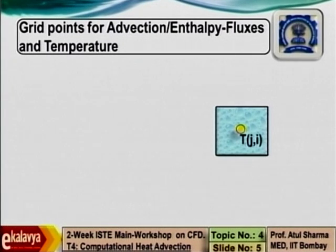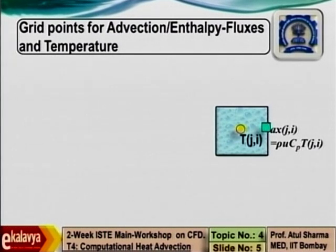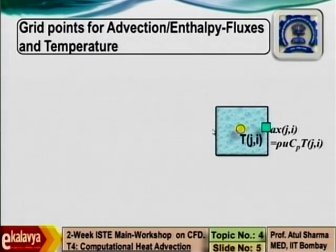In this control volume there are two vertical phase centers at which you will have qx left and right. I have to make a decision that out of the two only one should have index i comma j. Note that a phase is common to two control volumes. The left phase for this control volume will be the right phase of the west control volume; this is the right phase of this control volume but becomes the left phase of the adjacent control volume.